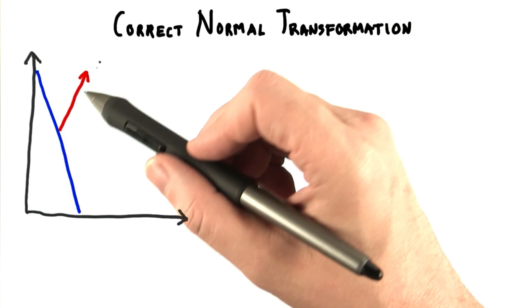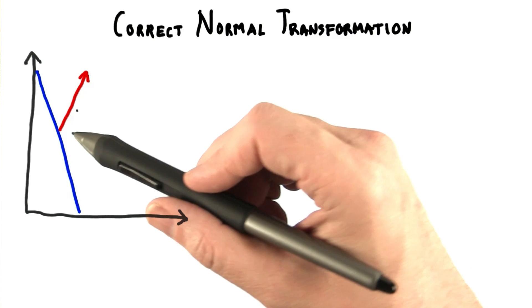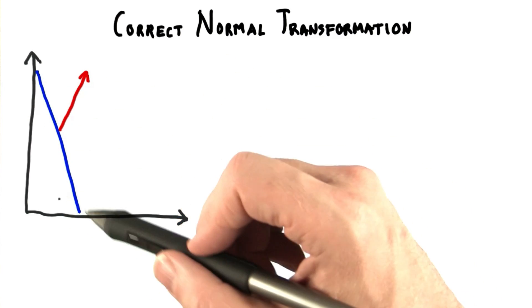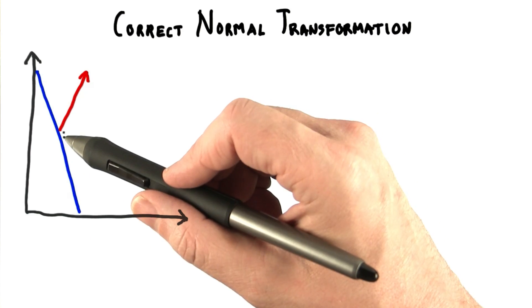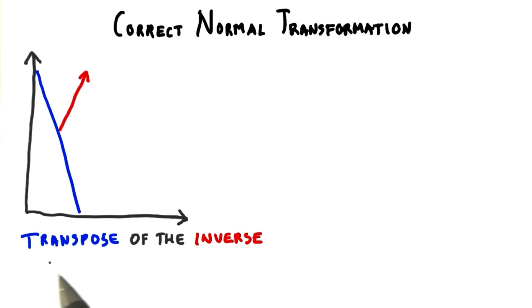We have a problem with transforming normals when using non-uniform scaling matrices. If we tried to transform the normal with the same scaling matrix used to transform the vertex coordinates, we ran into the strange situation of normals getting bent away from their surfaces. How to solve this?